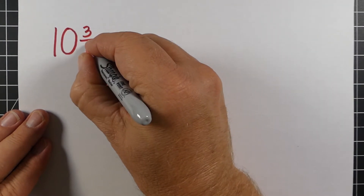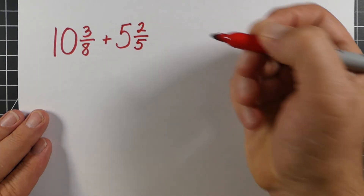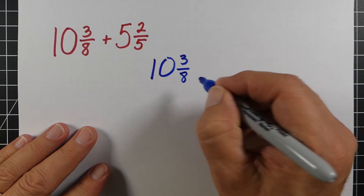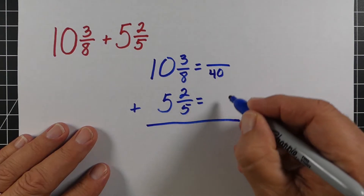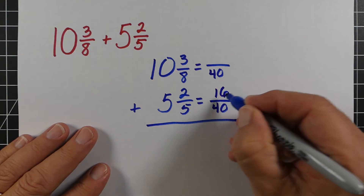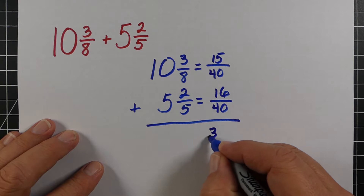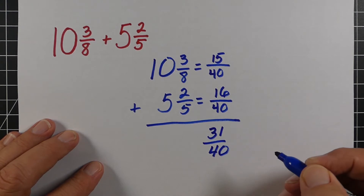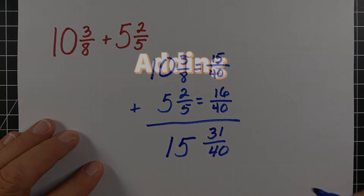For 10 and 3/8 plus 5 and 2/5, I like to stack them up. We need a good common denominator — in this case it's 40. Multiplying 5 by 8, I take 2 times 8 to get 16. Multiplying 8 by 5, I take 3 times 5 to get 15. Adding the numerators gives 31, keeping the 40. Adding 10 and 5 gives 15 for the whole numbers. So the answer is 15 and 31/40.